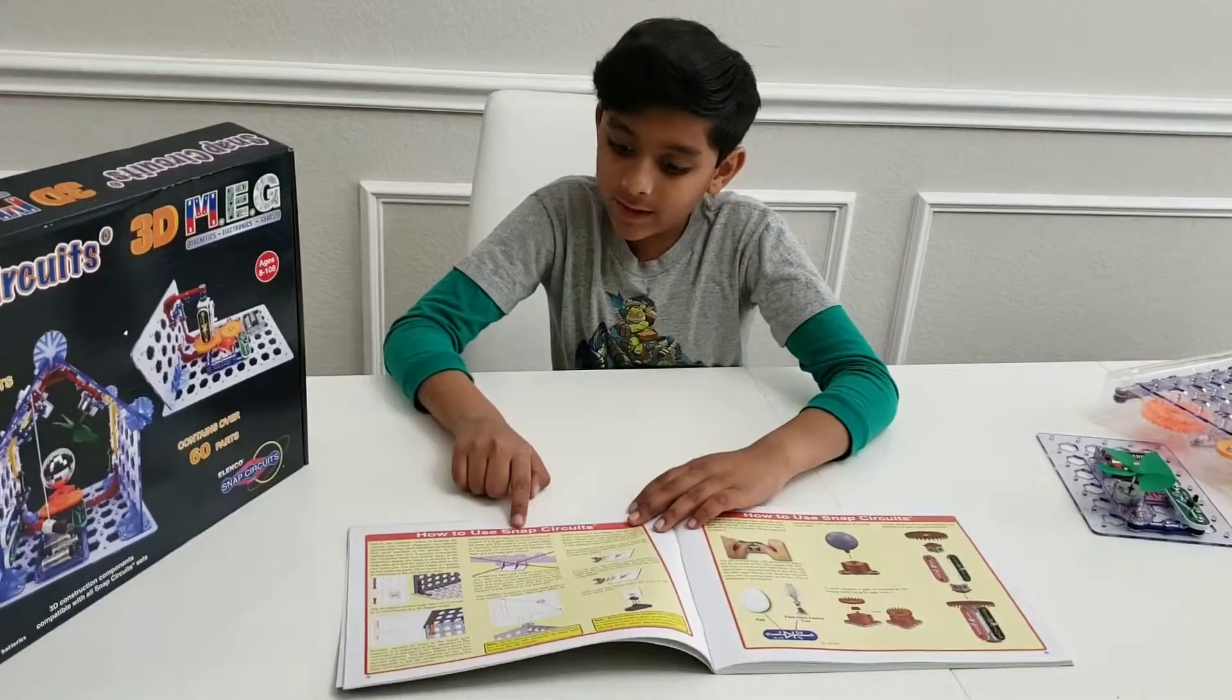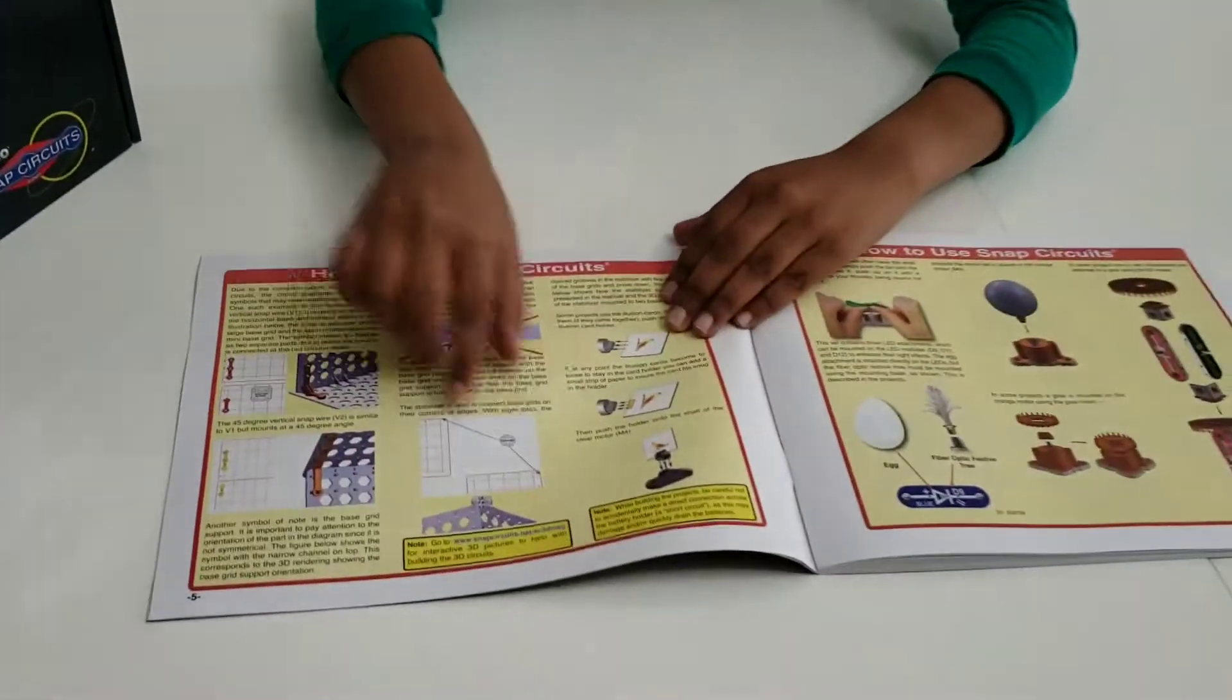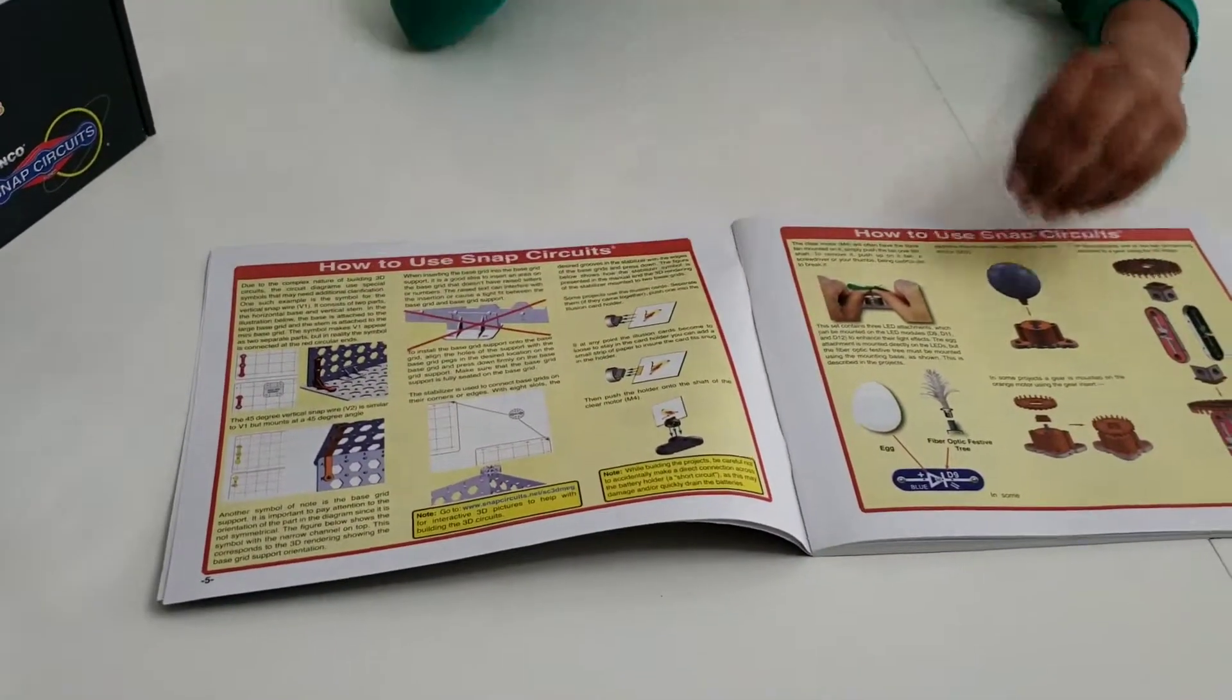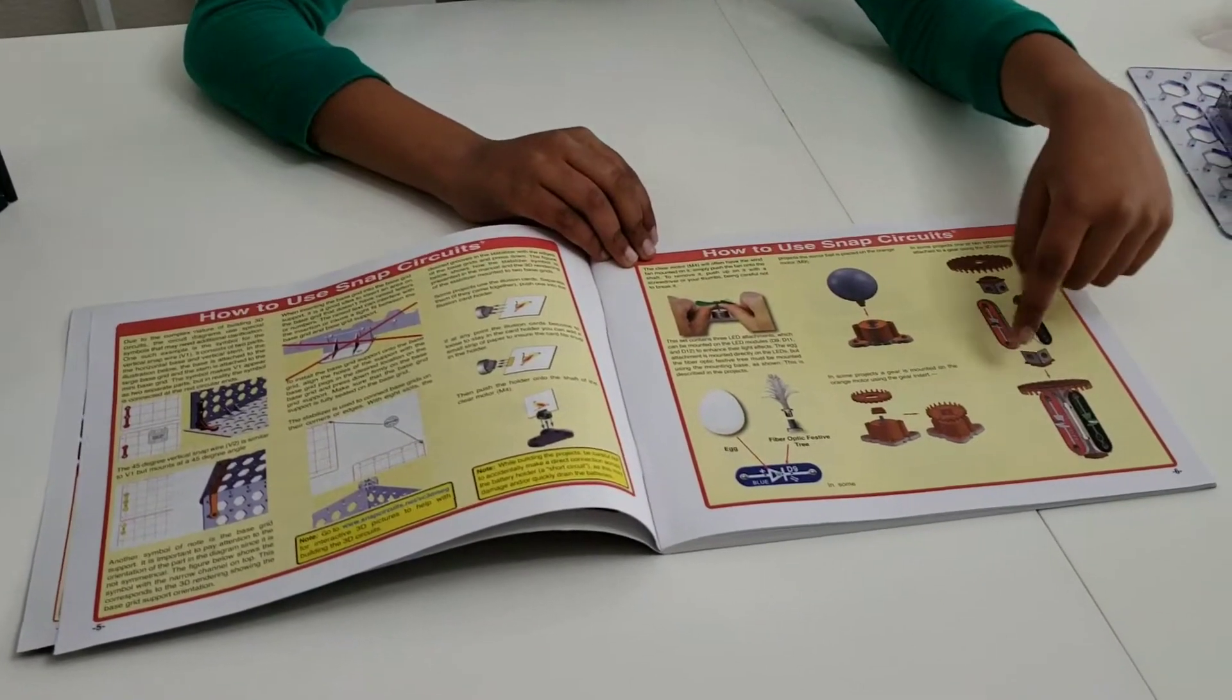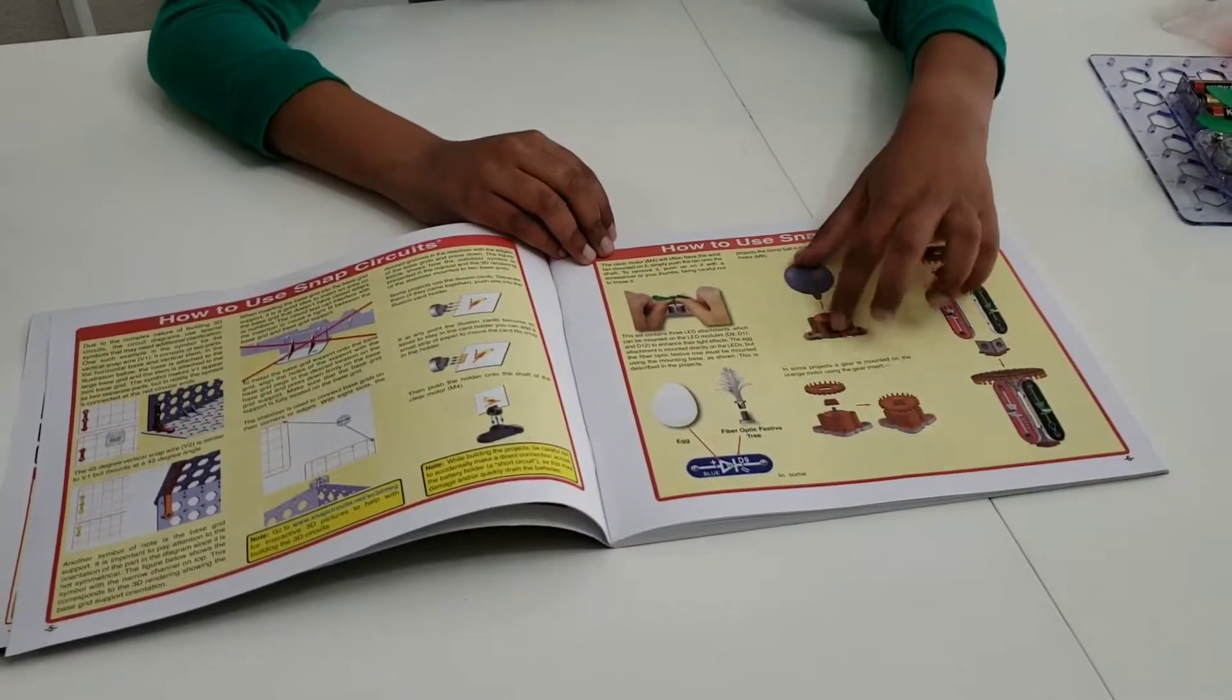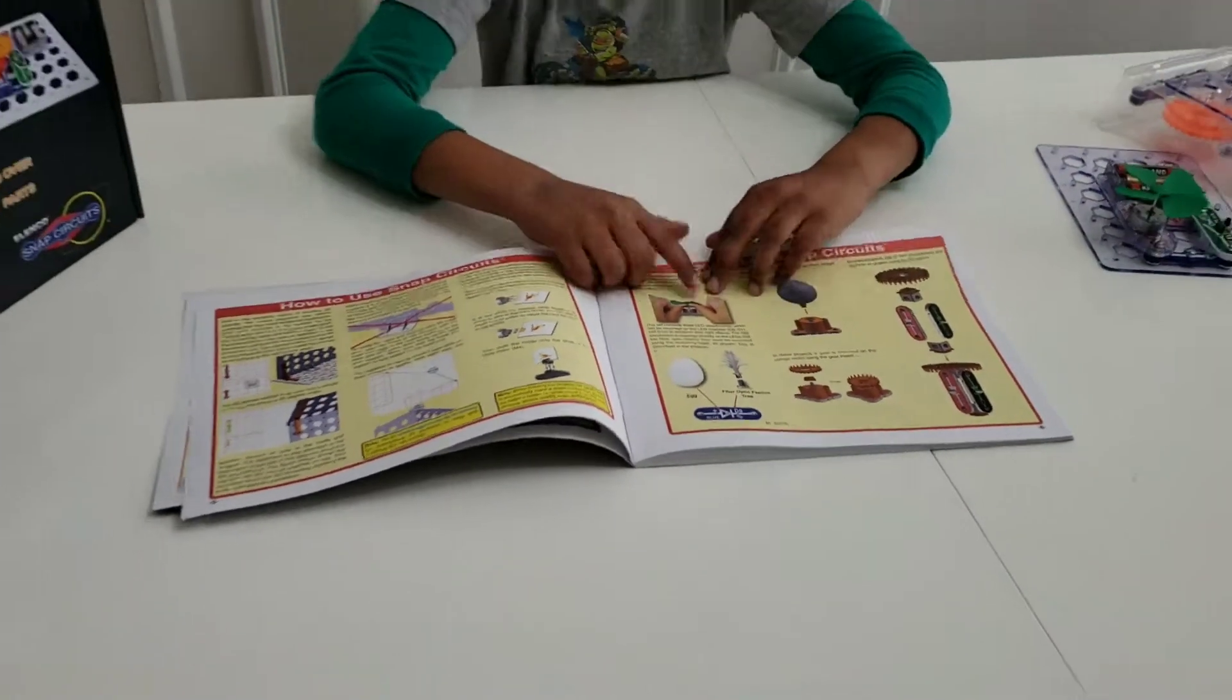Then, right here it shows some other cool features, and it shows you about the fiber optic tree, and it shows you about the gear, this light bulb thing, the motor,